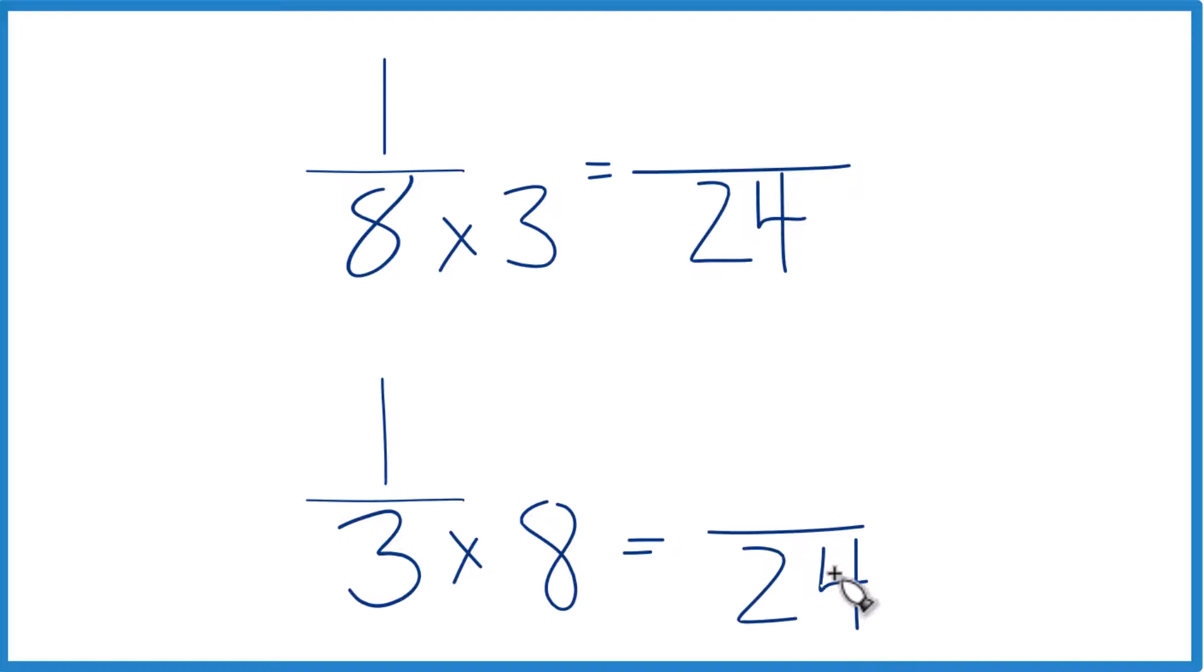And now we have the same denominator. But we can't just multiply the denominator by 8. We need to multiply the numerator up here by 8 too. 8 over 8 is just 1. So really we're just multiplying by 1. We don't change the value, just the way it's written.